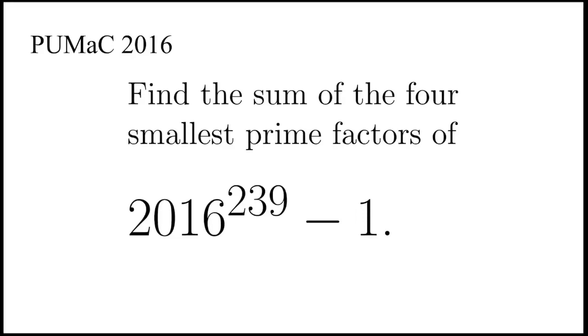Let's take a look at this problem, taken from the Princeton University mathematics competition 2016. It says, find the sum of the four smallest prime factors of 2016 to the power 239 minus 1.